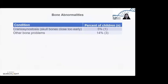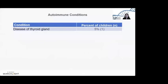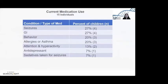Scoliosis, or curvature of the spine, is more common in adolescence and something pediatricians can monitor. It's generally associated with low muscle tone, not specific to this condition. We saw one individual with a thyroid problem. Medications used in this cohort largely align with the symptoms mentioned: seizure medications, medications for gastrointestinal issues, behavioral medications, and ADHD treatments. Standard medications for common conditions like asthma or allergies have also been used.